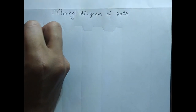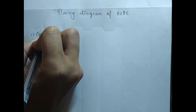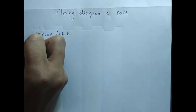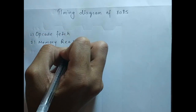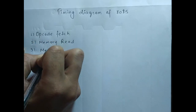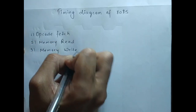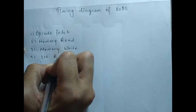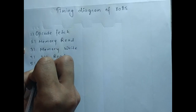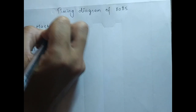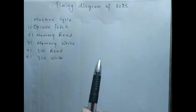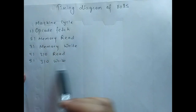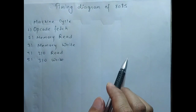The five machine cycles are: opcode fetch, memory read, memory write, I/O read, and I/O write. These are the machine cycles. If you know how to draw the timing diagram for opcode fetch, memory read, and these others, then you can draw the timing diagram for any instruction.